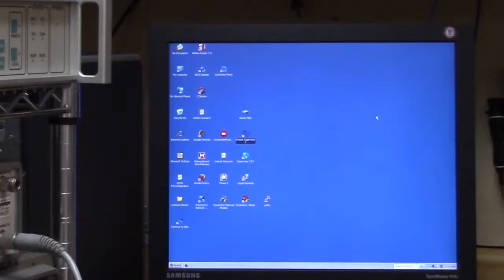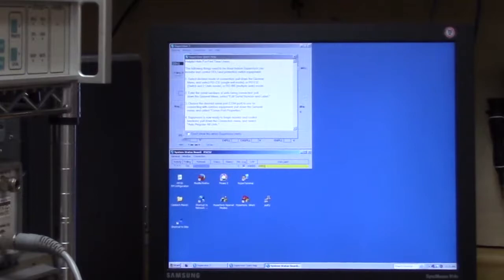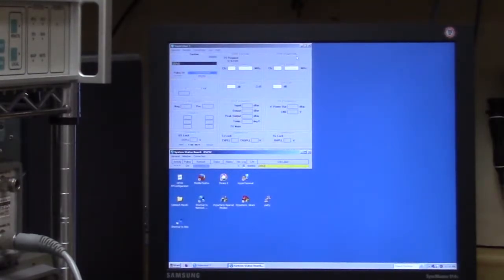First thing I'm going to do, I'm going to bring up the Anacom software. They call it their supervisor. Now I need to go over to connection and I've already connected this transceiver directly to the serial port so I'm going to say connect and register. So it's going to go looking for it now. It normally takes a few seconds to find it and then we'll start to see some of the parameters coming from that transceiver.